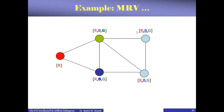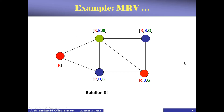But another node has only one possibility — it can be either green or blue. Therefore, according to our minimum remaining value heuristic, we should choose this variable next. We're going to choose this variable and make it red. Once we make that red, it automatically reduces the possible color for the last node to blue — it cannot be green or red. With this heuristic, we are able to assign these colors directly without ever needing backtracking.